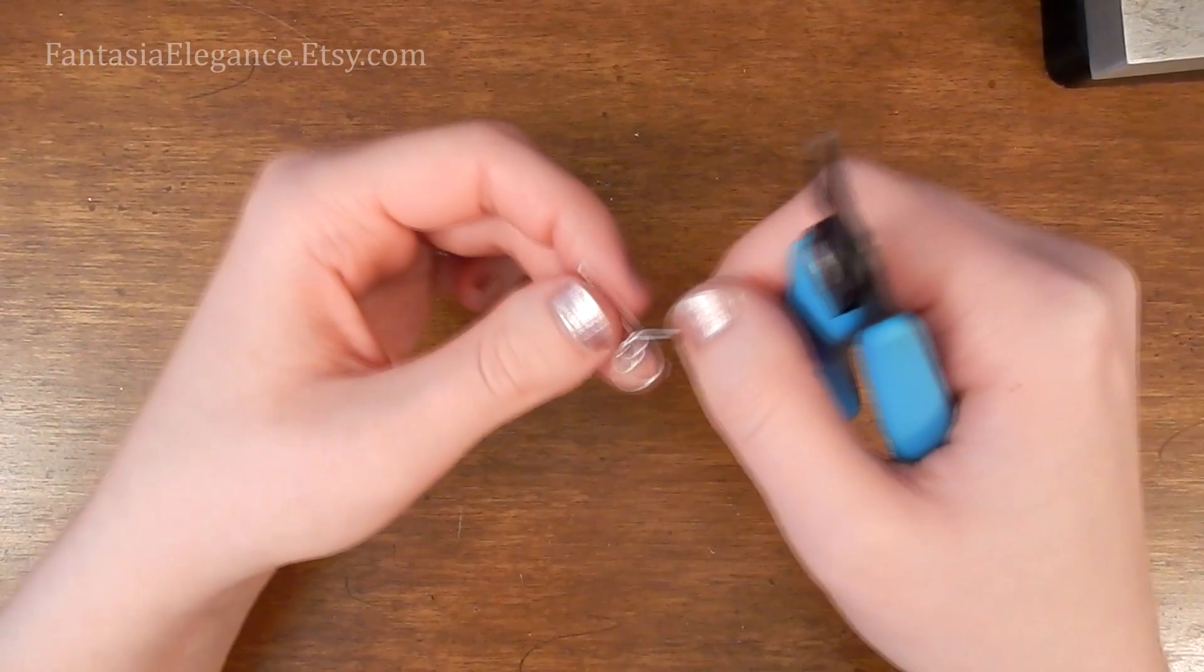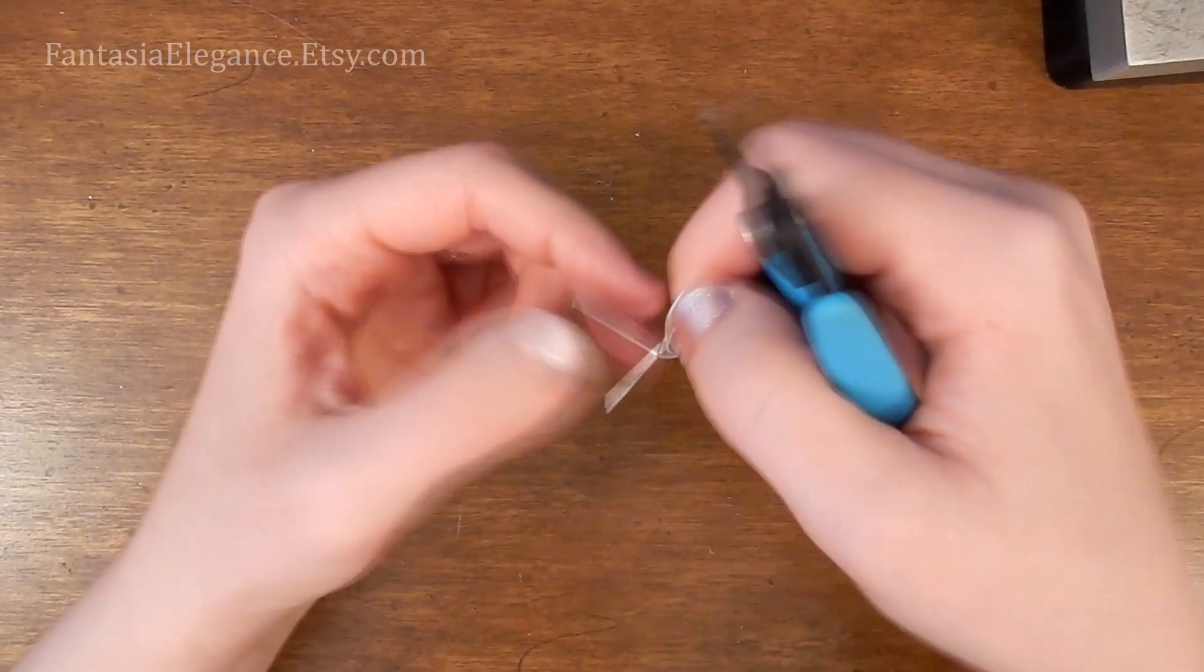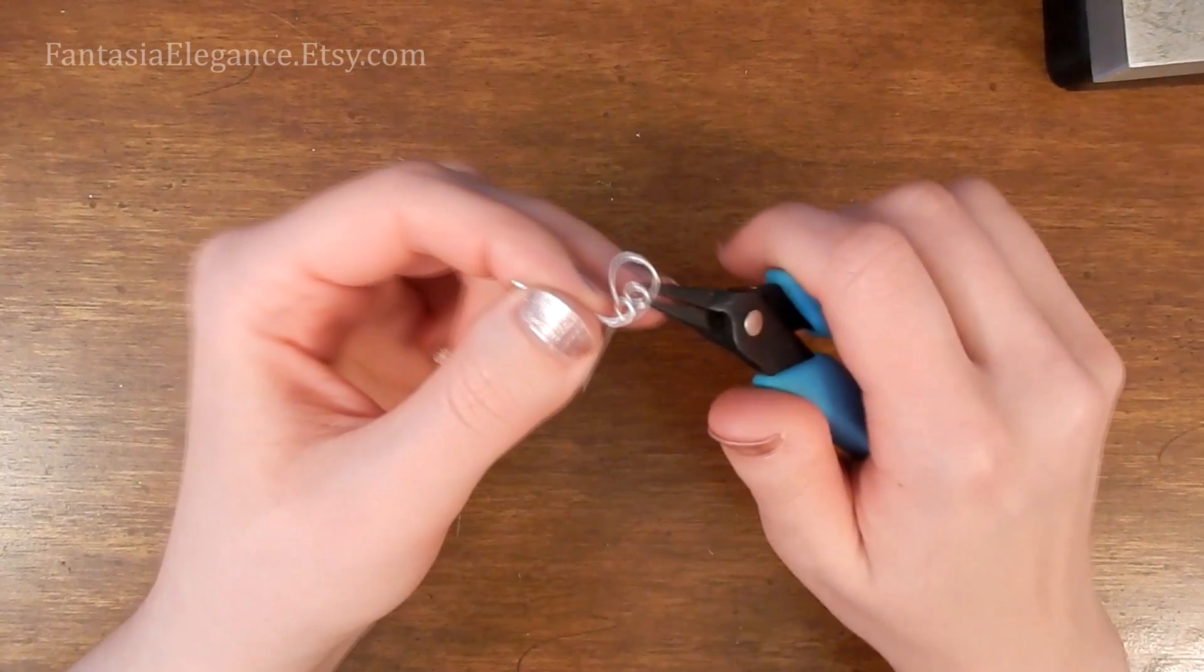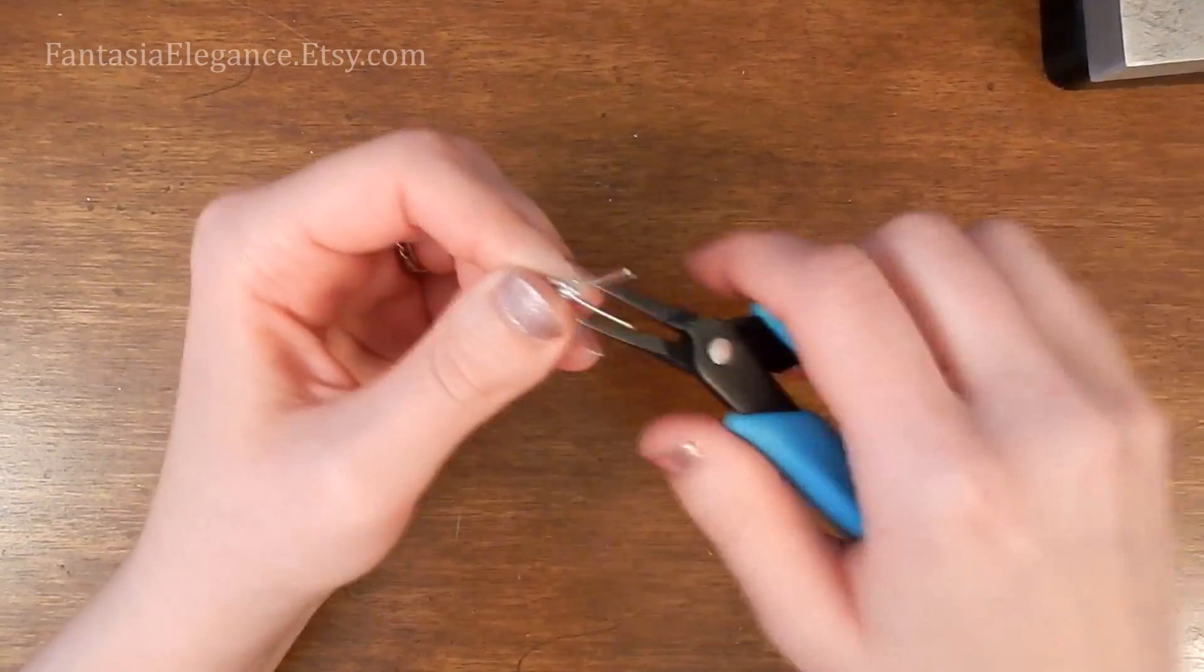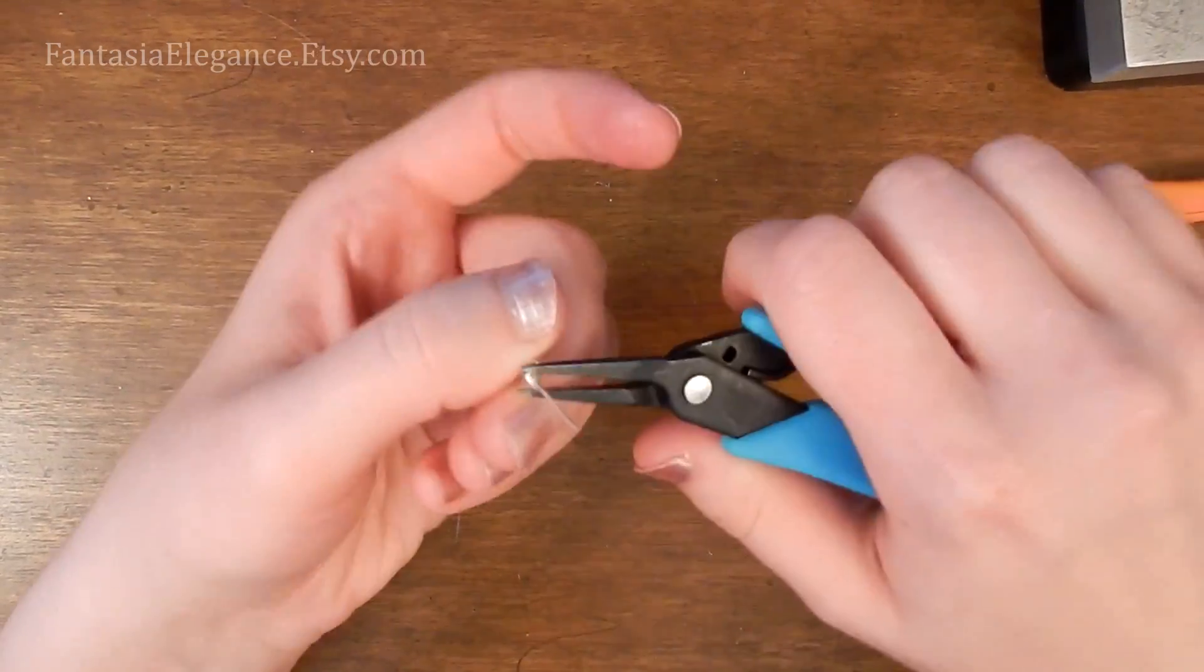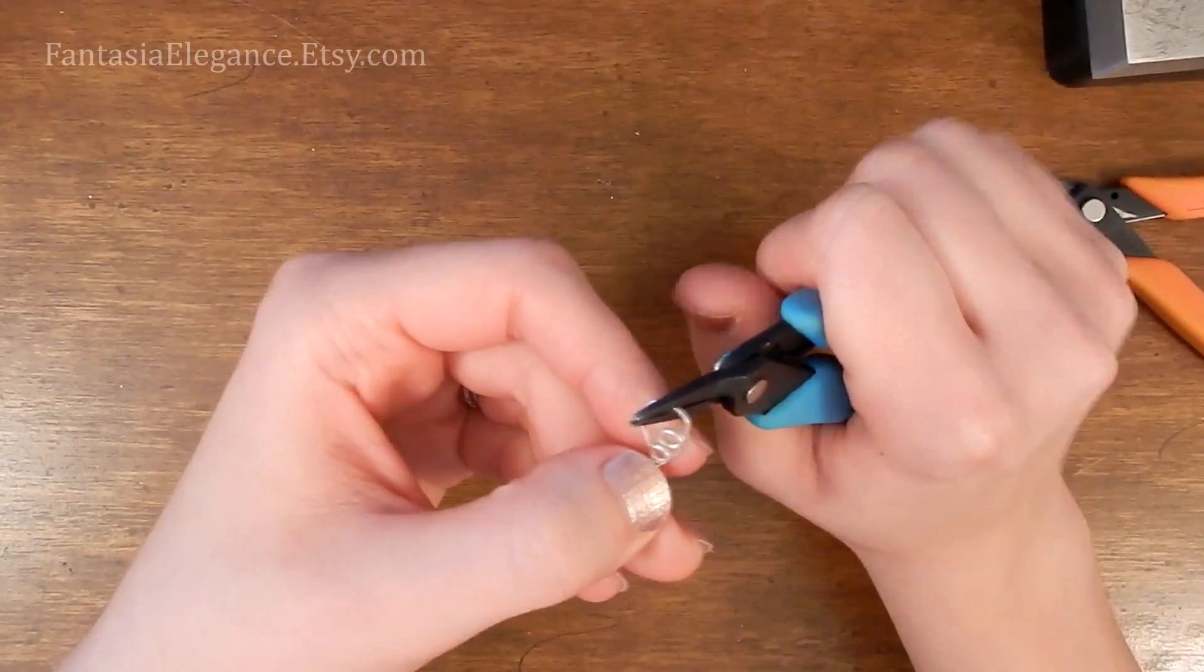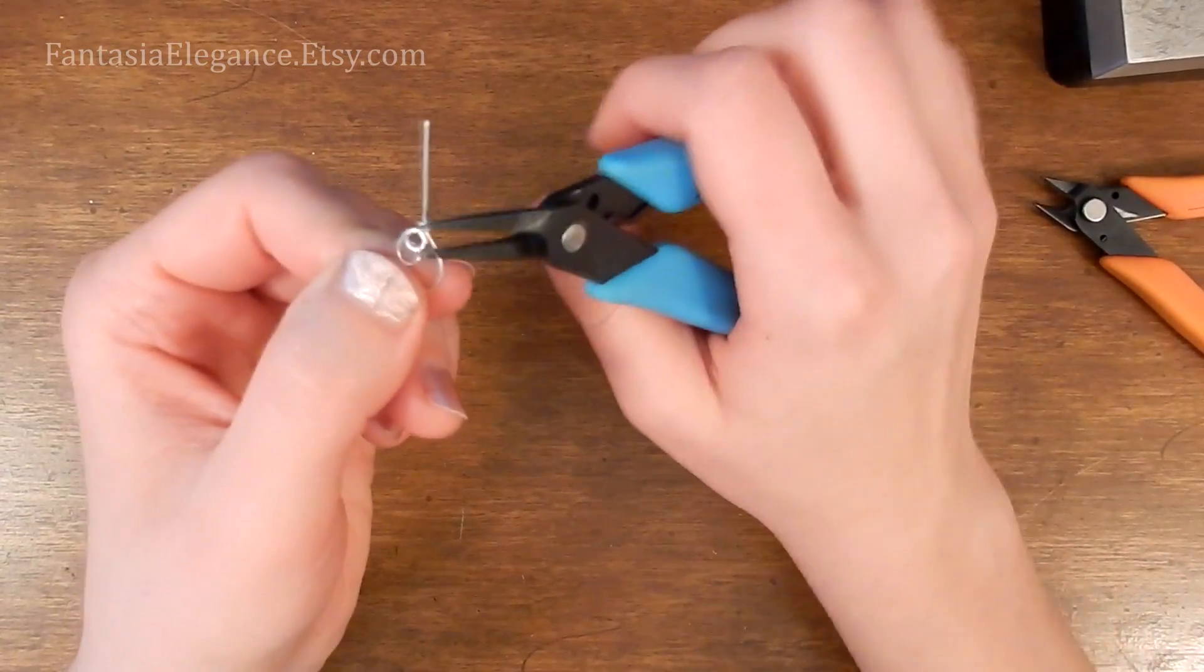And then as before, we're going to finish off with wrapping this tail around the base portion. And then we will make a second loop down here with this tail.